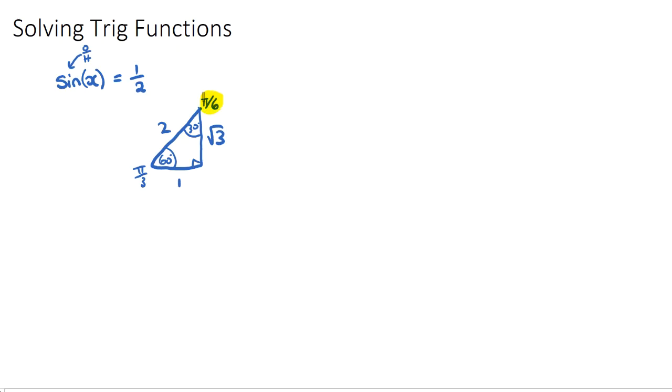And this is the challenging step, we need to try and decide which angle it's going to be, and hopefully you saw that pi on 6 would be our angle, because the opposite to pi on 6 is 1, and the hypotenuse is 2, and sine is opposite over hypotenuse.